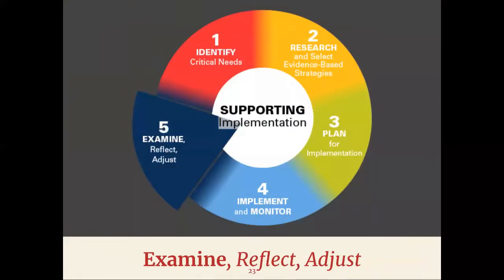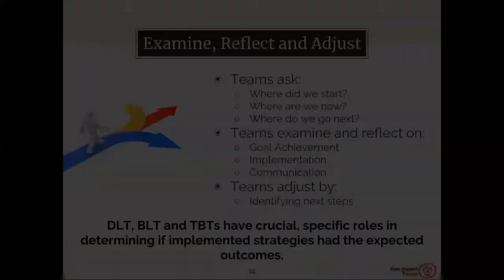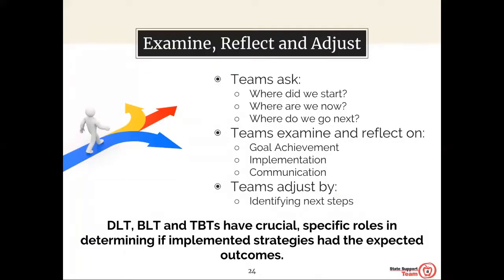Step five in the Ohio Improvement Process is examine, reflect, and adjust. One change in the process is the emphasis of not just examining, but now also reflecting and adjusting. When examining, reflecting, and adjusting, all teams should ask: Where did we start? Where are we now? And where do we go next? Teams should examine and reflect on goal achievement, implementation, and communication, and adjust by identifying next steps. The DLT, BLT or CSLT, and TBTs have crucial roles in determining if the implemented strategies had the expected outcomes at each level.